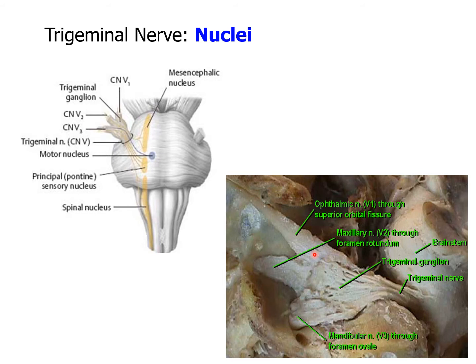A ganglion refers to a collection of nerve cell bodies outside the gray matter of the spinal cord. The trigeminal ganglion is located in a depression at the apex of the petrous temporal bone in a fold of dura mater known as the trigeminal cave. From the trigeminal ganglion, the three main roots of the trigeminal nerve emerge: the ophthalmic, the maxillary, and the mandibular divisions.